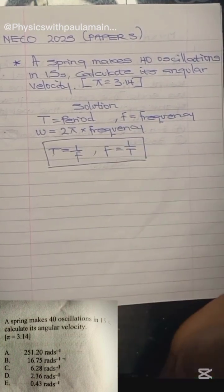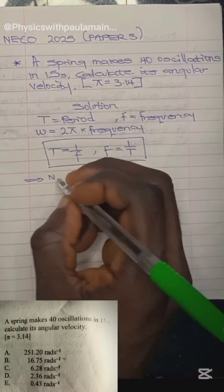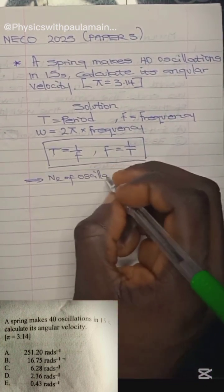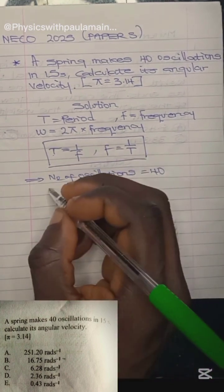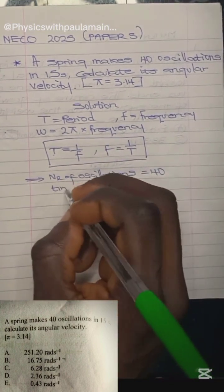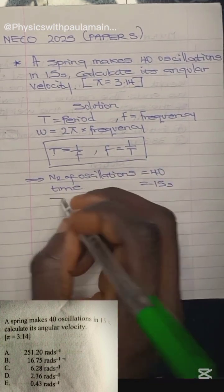In this question, let's list the parameters. We're given 40 oscillations - so number of oscillations is 40 - and the time for this number of oscillations is 15 seconds. Pi is given as 3.14.